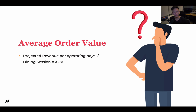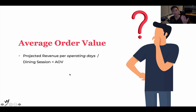Now, how do you calculate average order value? The formula is: your projected revenue per operating day divided by the dining session equals your average order value. The projected revenue is how much you are projected to make on a monthly basis.